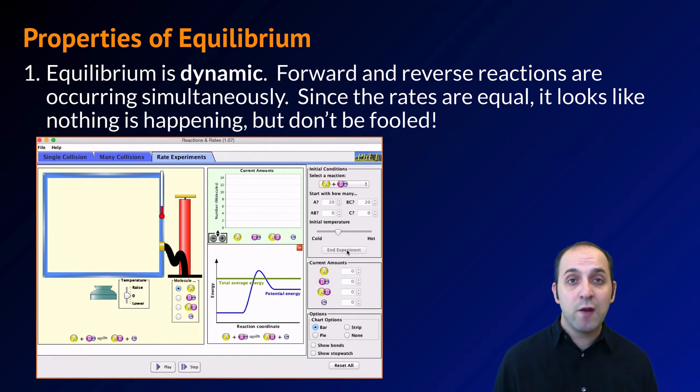The first property of equilibrium is that it's a dynamic situation, which means that the forward and reverse reactions are occurring simultaneously. When we're looking at chemical reactions, we're talking about so many atoms reacting in both directions, because atoms are so small, that it will seem like nothing is happening to us at the big macro level.